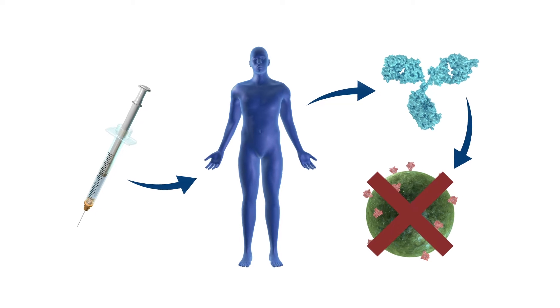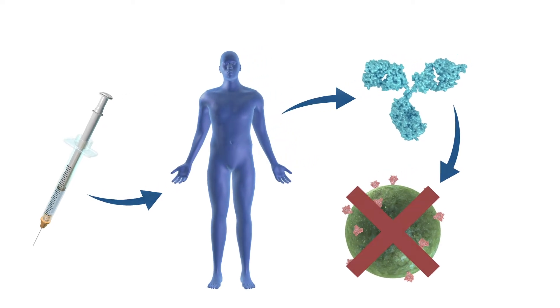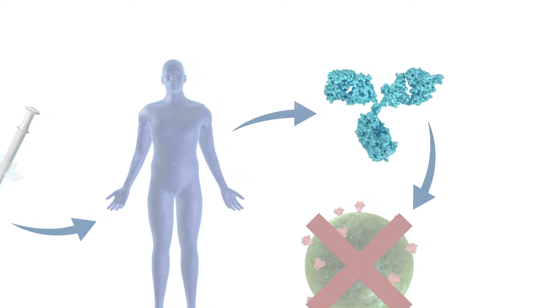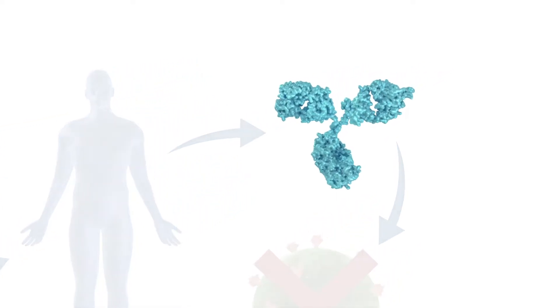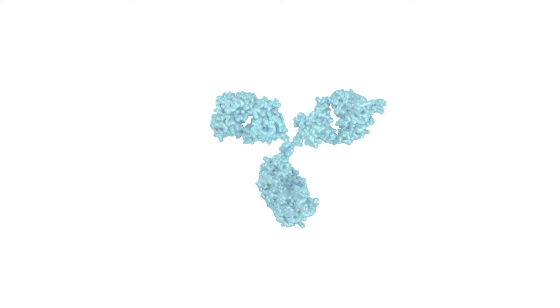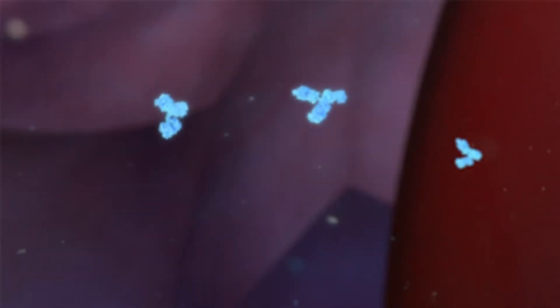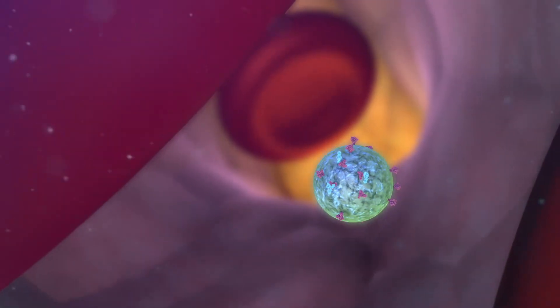BNABs are an unusual type of antibody, disfavored by the immune system, which does not readily produce them. For researchers developing an effective HIV vaccine, an elusive goal has been to elicit BNABs that potentially target HIV.